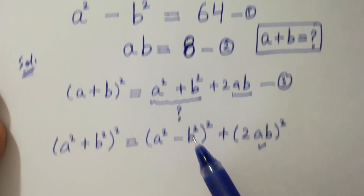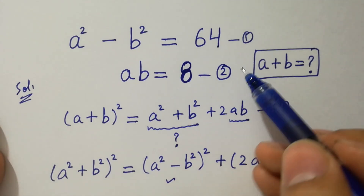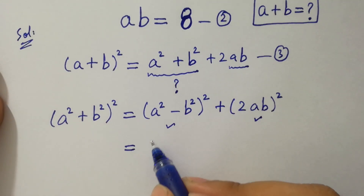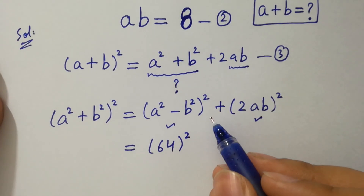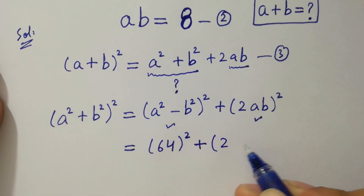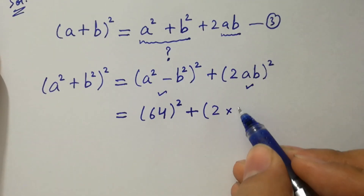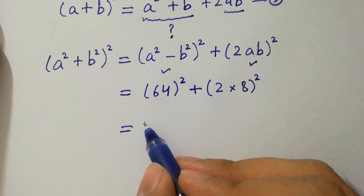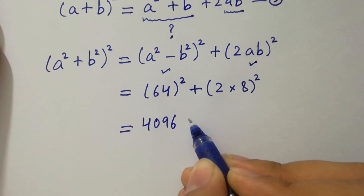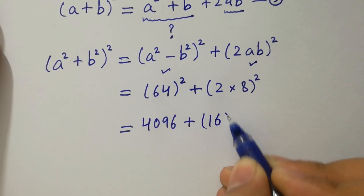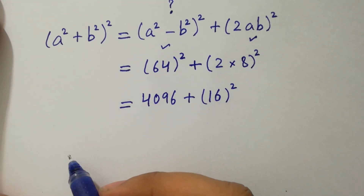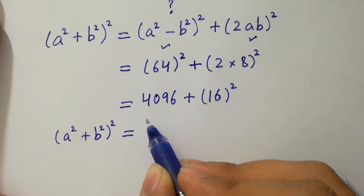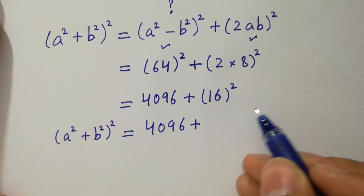Here, we have the value of ab which equals 8 and the value of a squared minus b squared which is 64. Now, putting in the values: a squared minus b squared is 64 to the power 2, plus 2ab is 8. Simplifying, we have 64 times 64 is 4096 plus 2 times 8 is 16, squared.